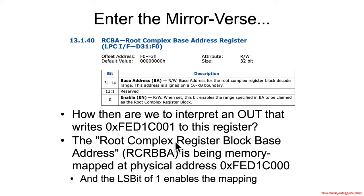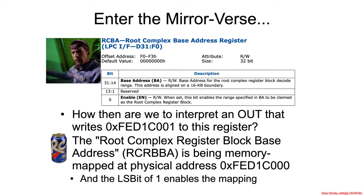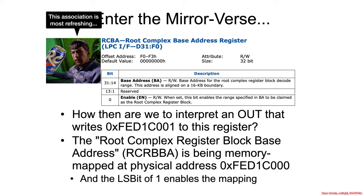I'm going to call this base address the Root Complex Register Block Base Address, or RCKERBA. In this class, RCKERBA is going to be represented by a can of RC Cola — we get into a lot of acronyms and abbreviations, and the important ones get an icon. The register that holds RCKERBA is called the RCBA register. Think of it as mirror-universe Spock — CBA is ABC backwards — mirror universe. So RCBA, which is mirror-universe Spock, holds RCKERBA. It sounds more Klingon than Vulcan, but we're going to go with it.